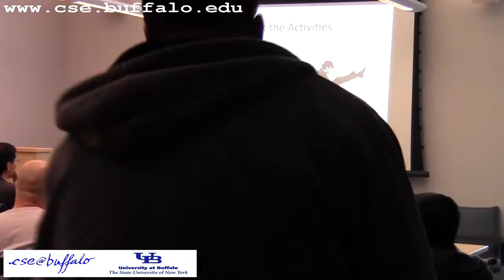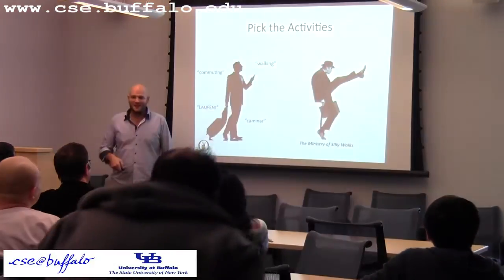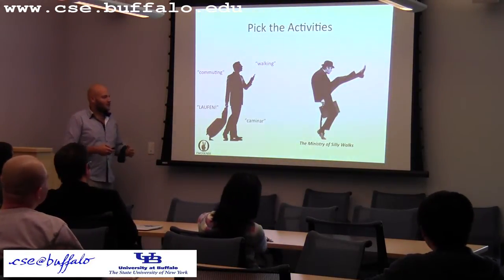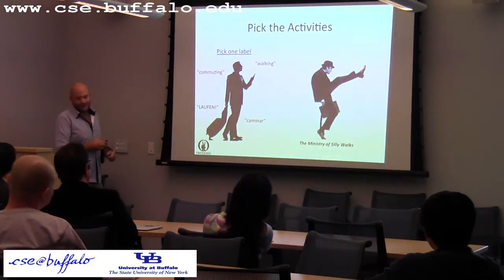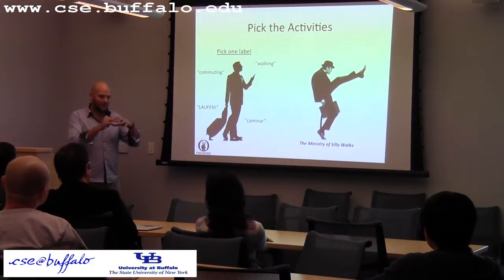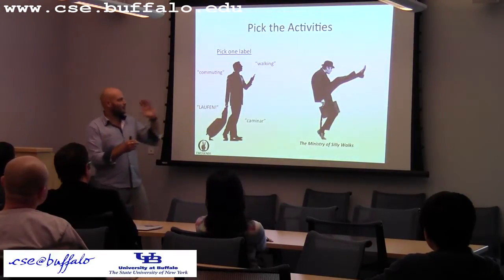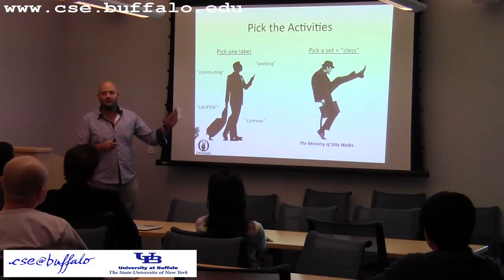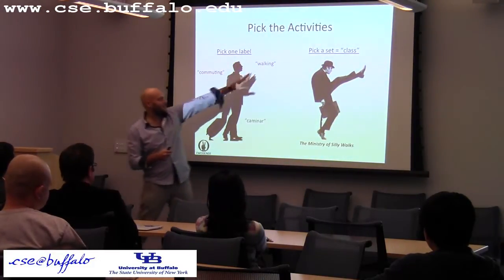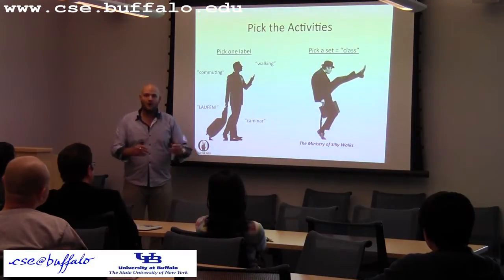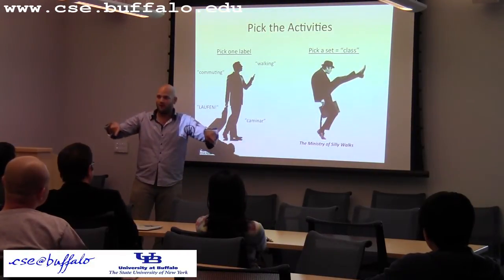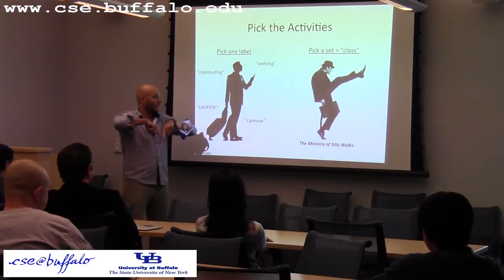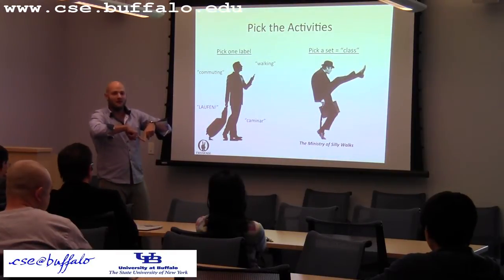There are also many different ways in which an individual can walk. So how do we start? We have to select one label — we say we're going to recognize 'walking' — and then we pick a subset of behavior to recognize. We draw a border around all of the space of physical activity of a human being and say everything inside this border is walking. That is called an activity class, and this is what we're going to recognize.